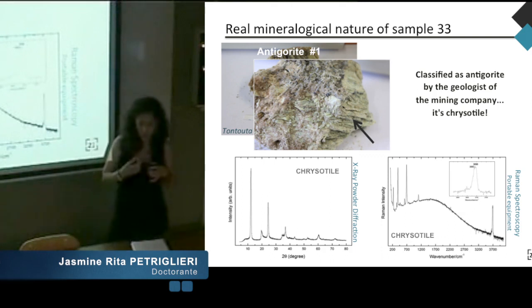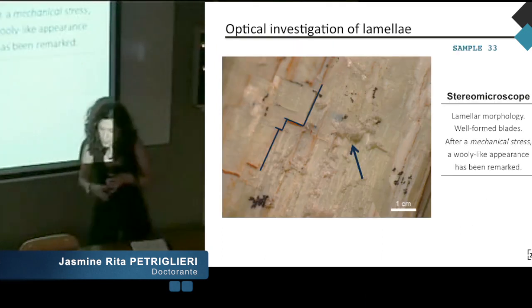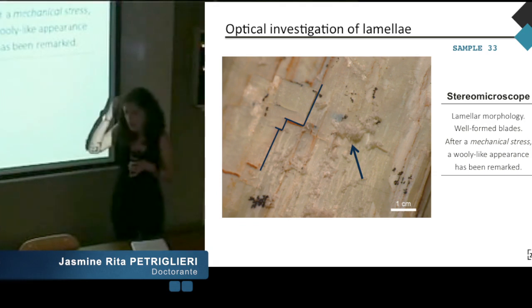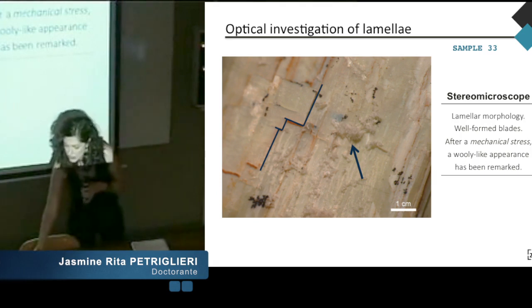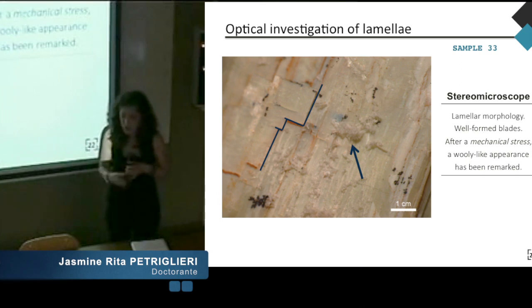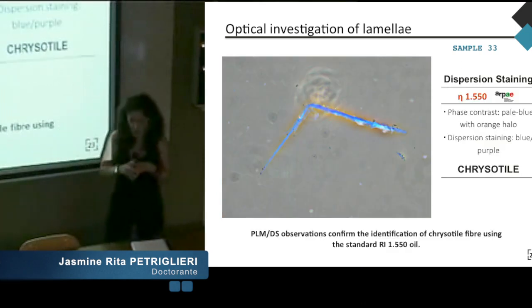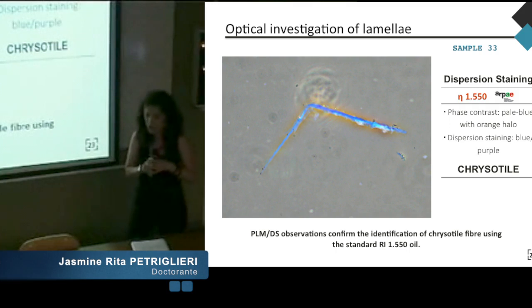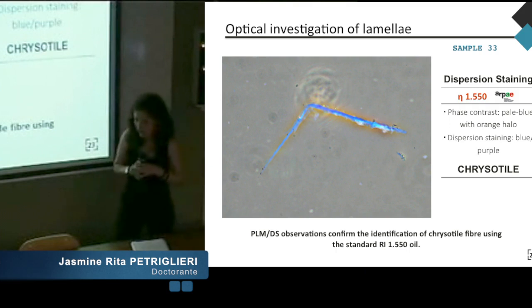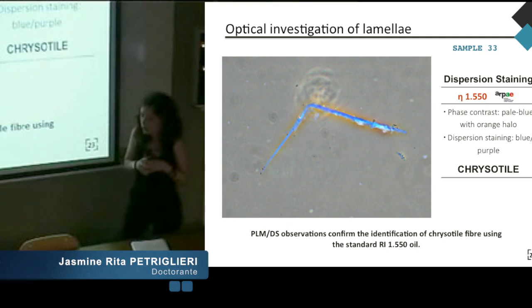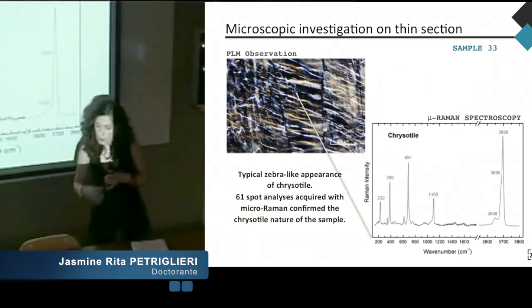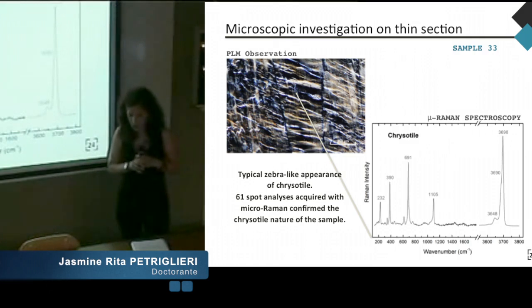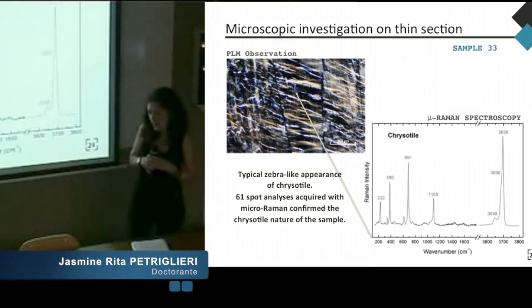We decided to characterize this sample in more detail in order to better understand its real mineralogical nature. At the stereomicroscope, the sample appears characterized by lamellar morphology. But just after a mechanical stress on the surface, we observed the appearance of individual fibers. These fibers were analyzed with dispersion staining methods, and using the standard refractive index liquid at 1.550 we can identify the chrysotile phase. At phase contrast, we observe a beautiful pale blue with orange anomalous color fiber. The observation of a petrographic thin section with optical microscopy and a systematic study realized with micro-Raman spectroscopy confirmed the identification of chrysotile.